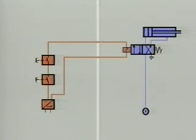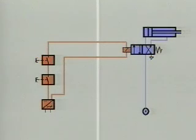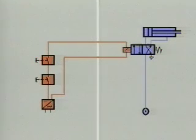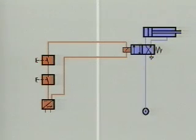In a corresponding electro-pneumatic control there are electrical signal elements in the control part. In this case signal processing is not carried out by a special device, but by connection of the various signal elements in such a way as to produce the function. The directional control valve, or more accurately the solenoid valve, is now actuated electrically.